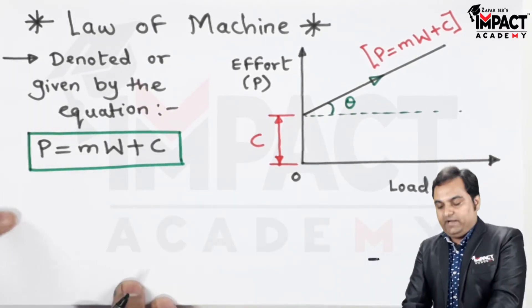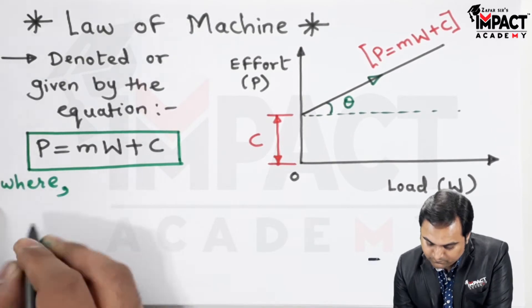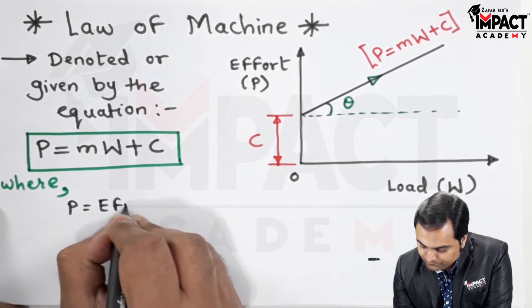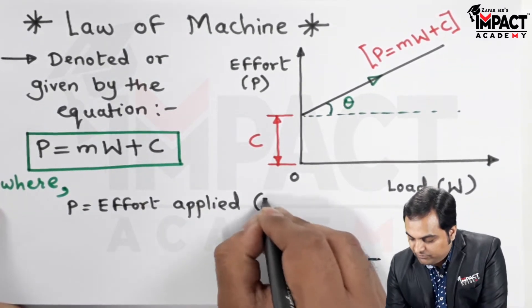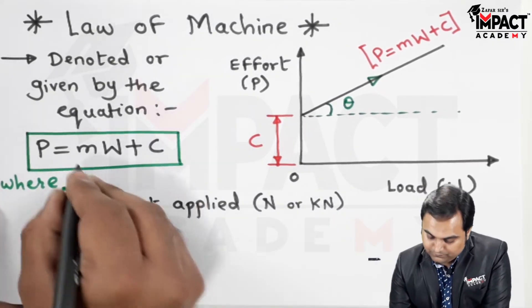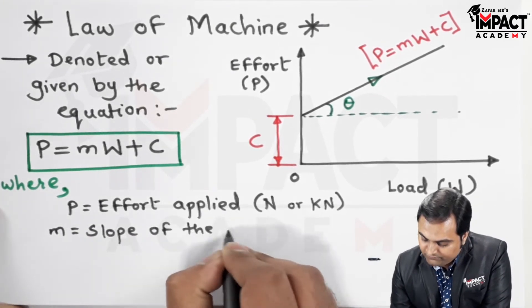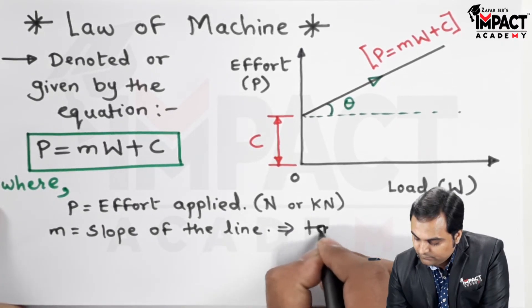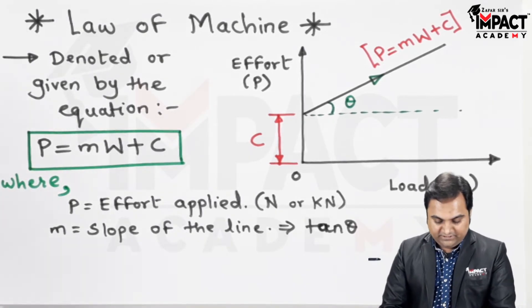P is equal to m into W plus C, and here P is the effort applied. Now effort can be in terms of newton or in terms of kilo newton. Then m is the slope of the line given by tan theta.